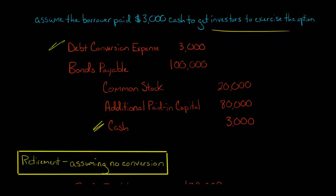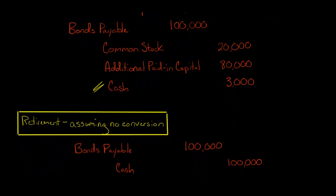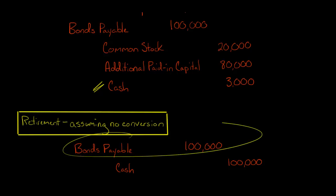Now let me give you another hypothetical. In the previous examples I assumed there's a conversion, but what if there's no conversion? What if the investors never decide they want to convert the debt to common shares — they just stay with the debt. Well, if there's retirement, the company that borrowed the money is going to credit cash for $100,000 when they repay the debt and debit bonds payable. If they pay more or less than that — for example in an early retirement — you could have a gain or a loss, similar to early retirement of any type of bond, whether it's convertible or not.